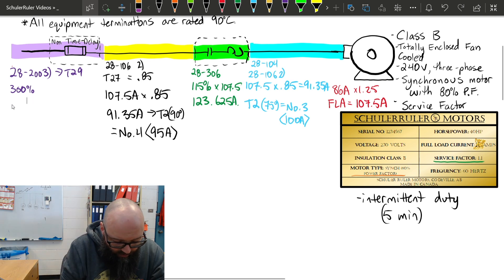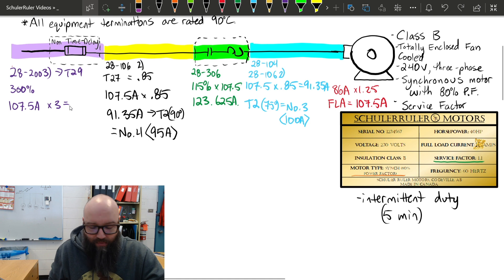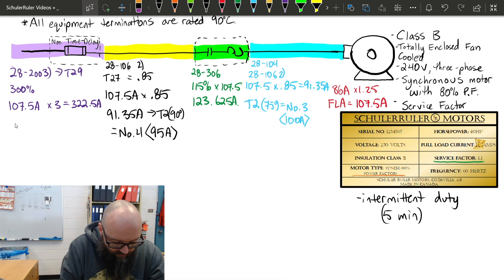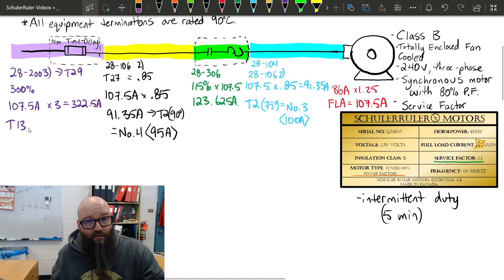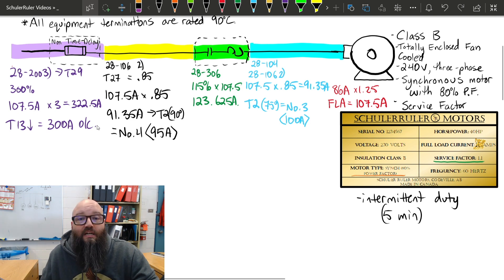In this case, we're just going to run the numbers. We're looking at 107.5 amp FLA times 3 gives me a maximum calculated value or maximum calculated trip setting of 322.5 amps. I cannot exceed this. I have to go to table 13 if I'm selecting an overcurrent device. Because I cannot exceed this, there is no 322.5 on table 13. I have to go down. I go down at table 13 and I select a 300 amp overcurrent device. That would be the max size device that I can put on that branch circuit to protect that synchronous motor.